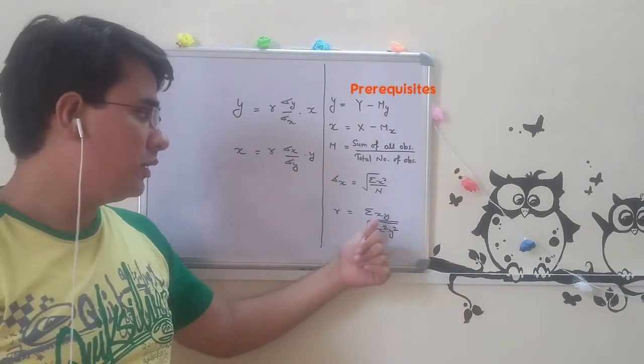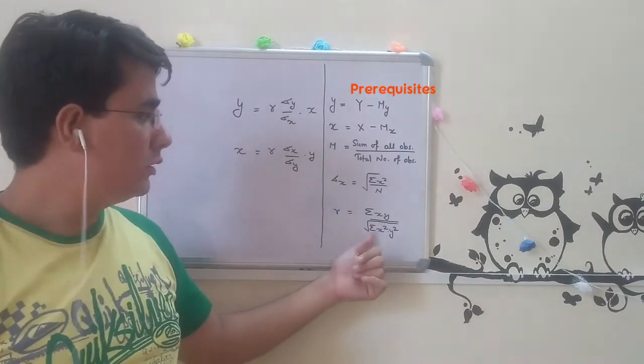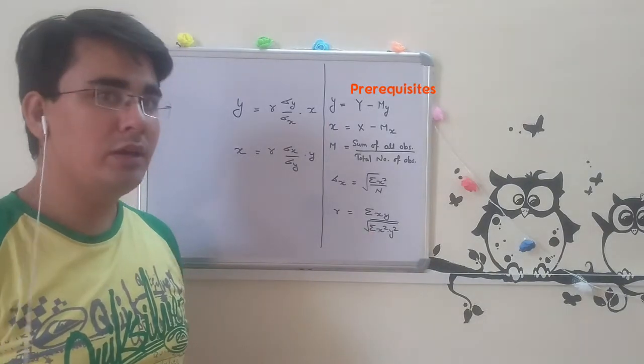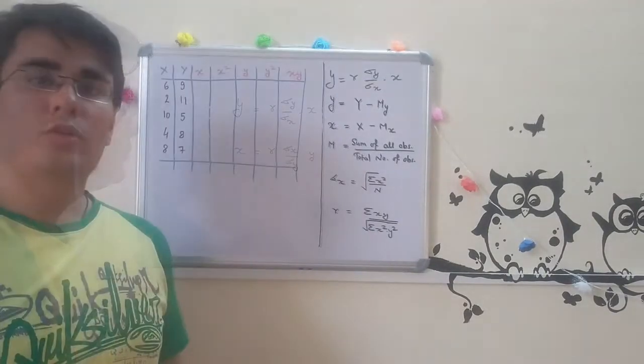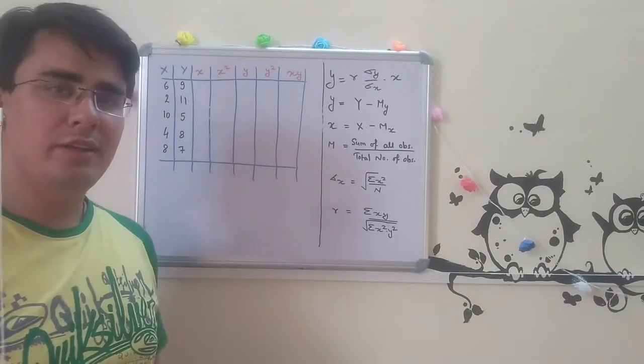R is the correlation between two variables: sigma xy, that means x into y, over root sigma x square into y square. Let's look at one example of finding the regression equation.